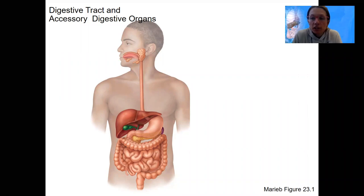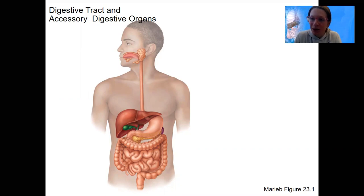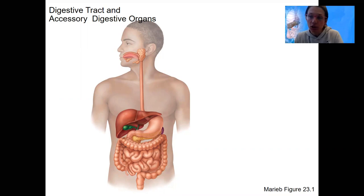The next two weeks we're going to talk about the digestive system. The digestive system digests food — that means breaks down food — and then we're going to absorb it. So the digestive system doesn't just digest, it also absorbs. It also allows for movement. But the main goal, what really matters, is actually the absorption.